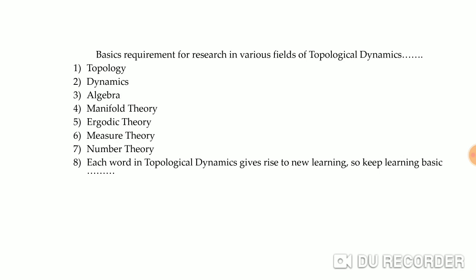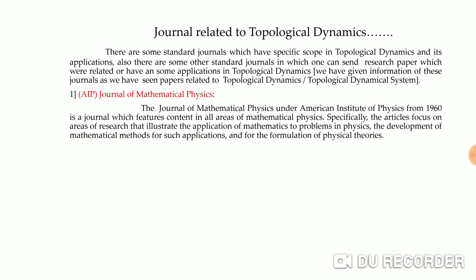Let's see some journals where topological dynamics papers can be found. There are standard journals having specific scope in topological dynamics and its applications. The first one is the Journal of Mathematical Physics under the American Institute of Physics (AIP), published since 1960, having lots of application towards mathematical physics. Articles focus on areas of research involving the application of mathematics to problems in physics, the development of mathematical methods for such applications, and the formulation of physical theories.